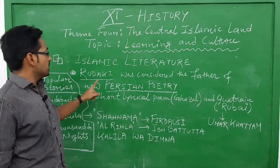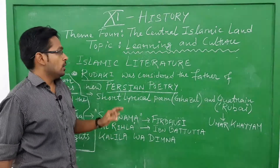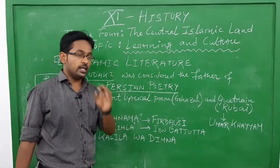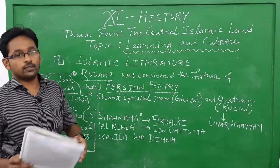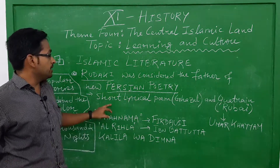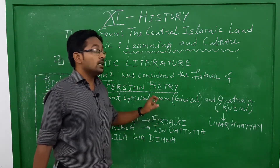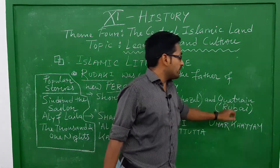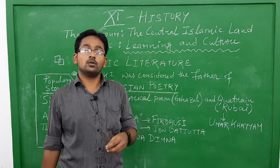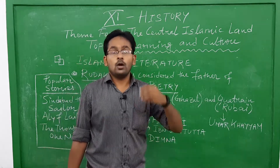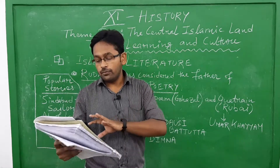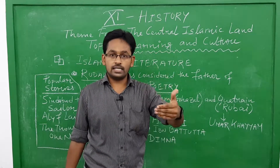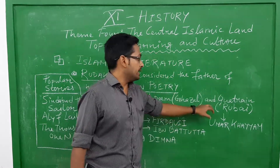Rudaki was considered the father of new Persian poetry. He introduced the short lyrical poem called Ghazal and the Quatrain called Rubai. A Quatrain is a four-line stanza poem — only four lines are there in the poem — and it is known as Rubai.